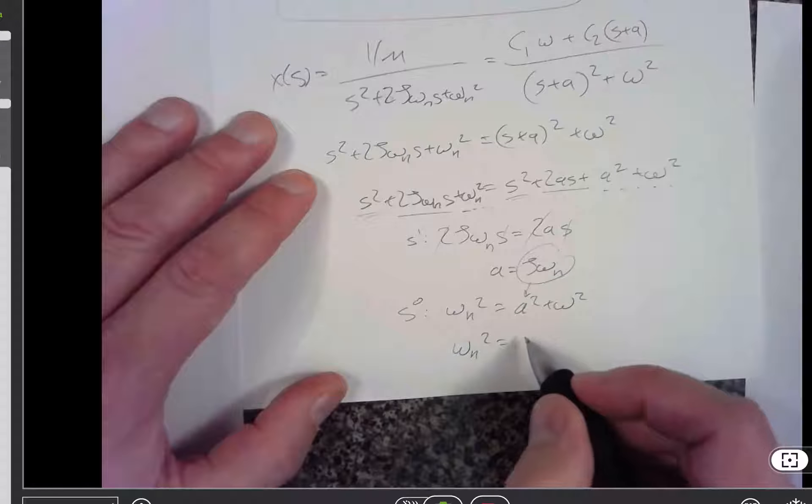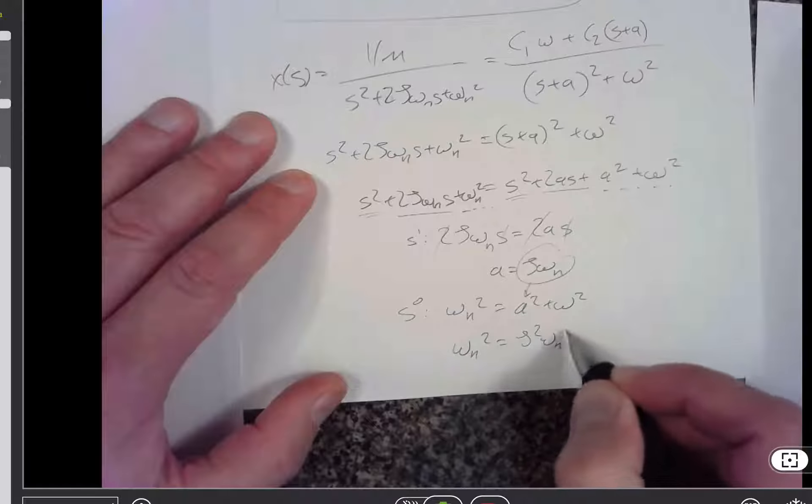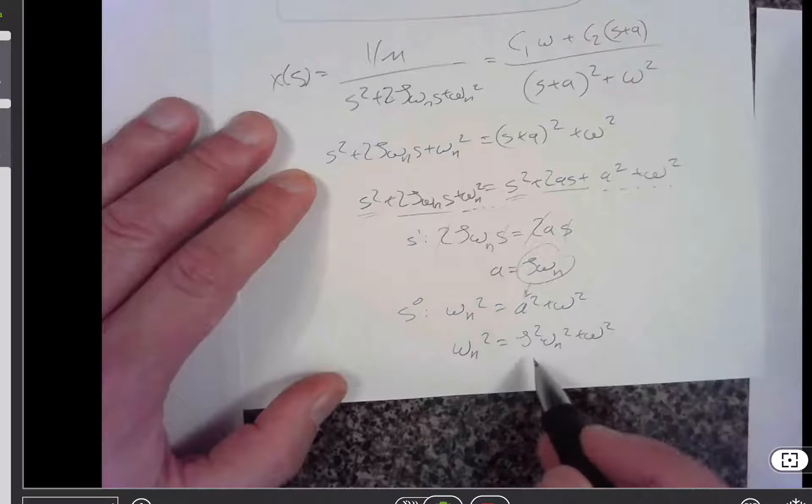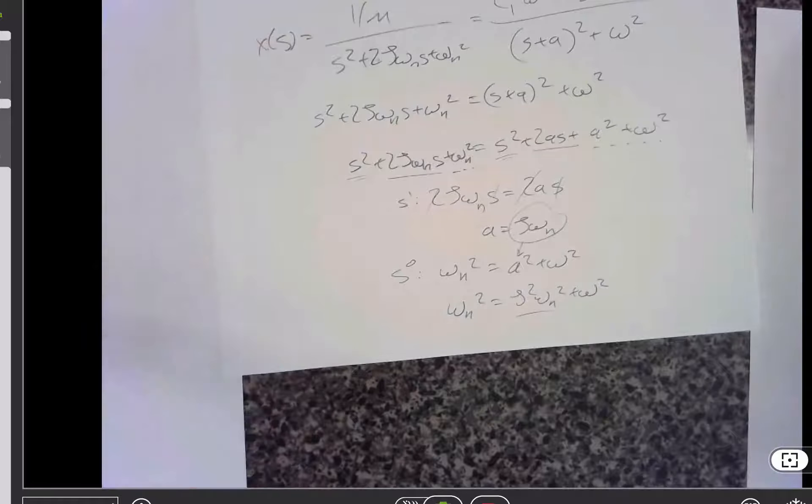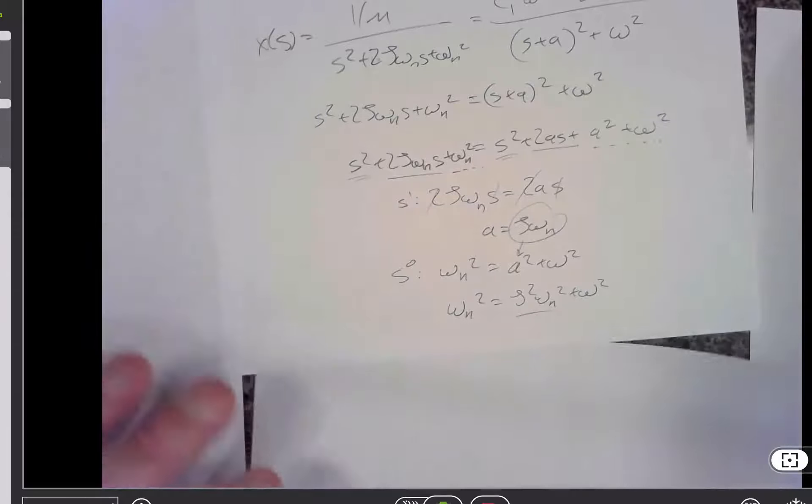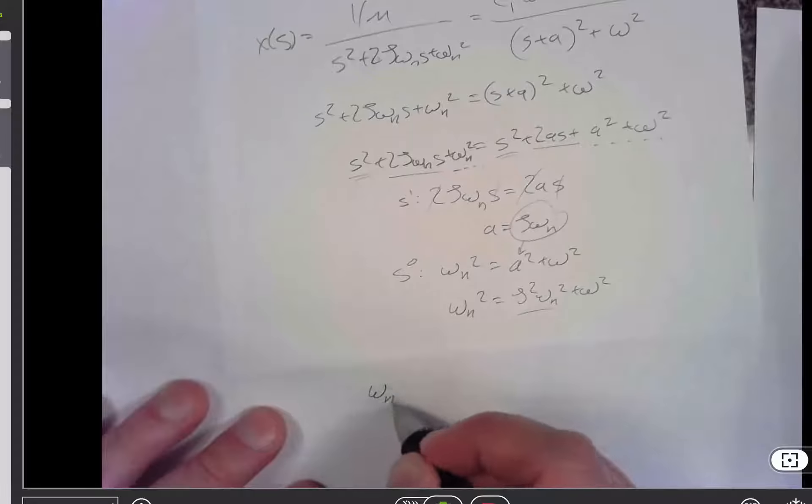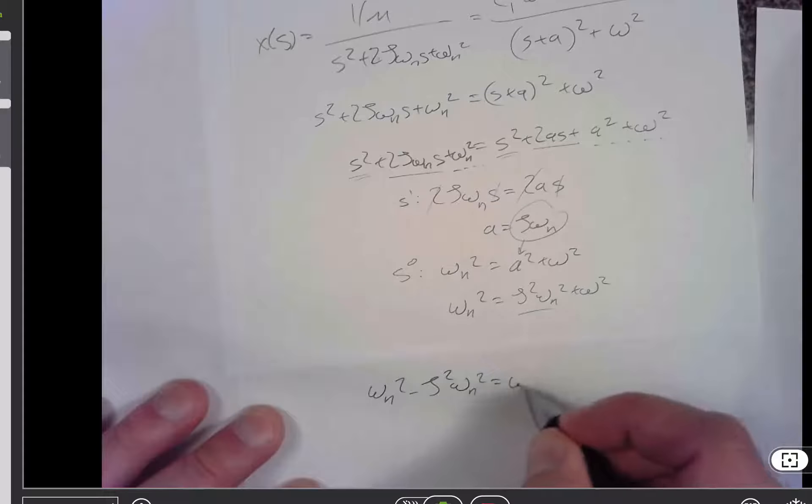Omega n squared is equal to zeta squared omega n squared plus omega squared. Let's subtract that across to the other side. And I get that omega n squared minus zeta squared omega n squared is equal to omega squared.